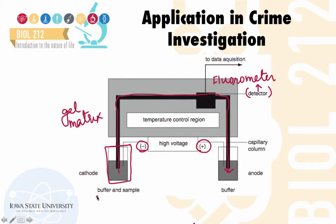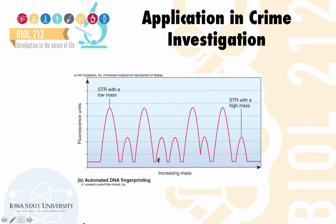This process is carried out separately for suspect one, suspect two, and the evidence — three separate samples run through the apparatus. After the samples run through the capillary gel electrophoresis and are detected by the fluorometer, what comes out is a profile of the STR fragments. Those with lower mass come out sooner compared to STR fragments with higher mass. We obtain a graph for each sample and compare all three graphs to find out which one matches the evidence.